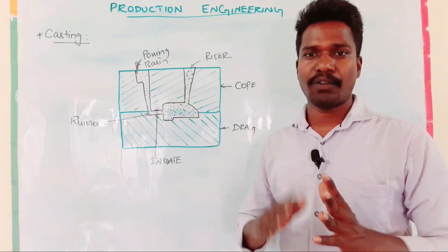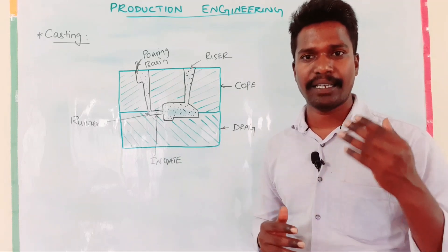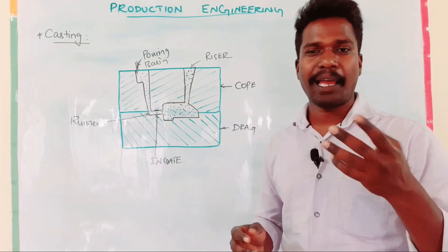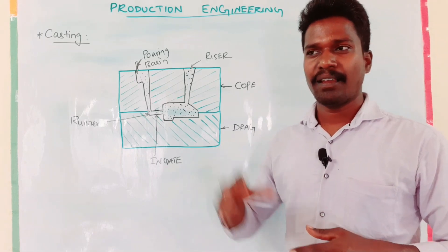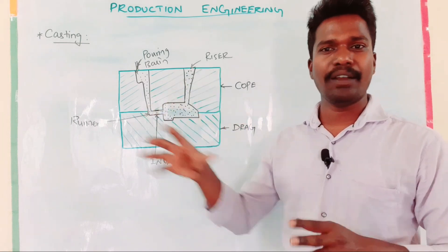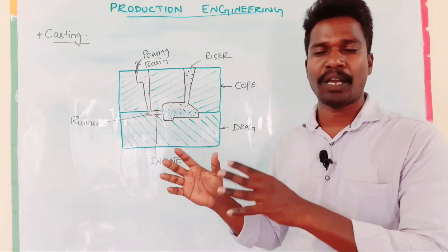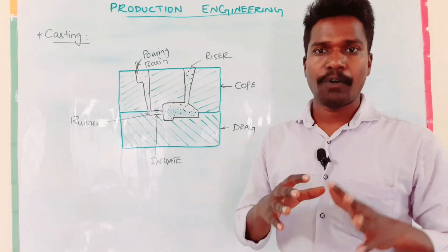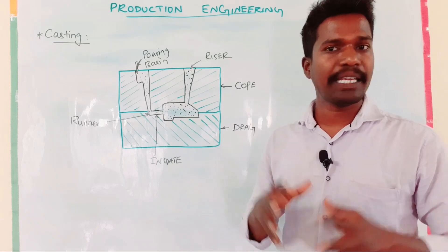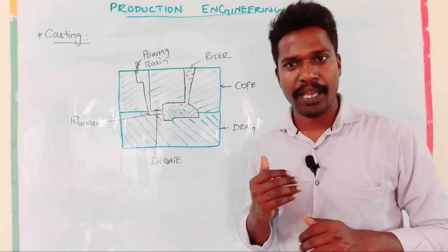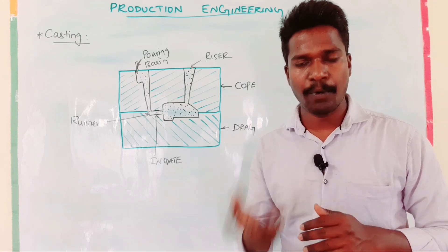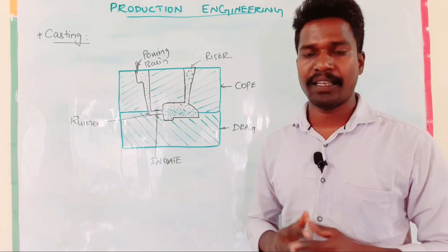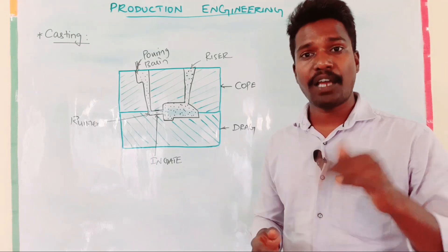Foundry is of two kinds: Captive Foundry and Jobbing Foundry. Captive Foundry is a company-owned foundry. They have a company called Foundry and they'll provide the product for their own use. If they are a company-called Foundry, they'll buy the product for themselves. That is a Captive Foundry.